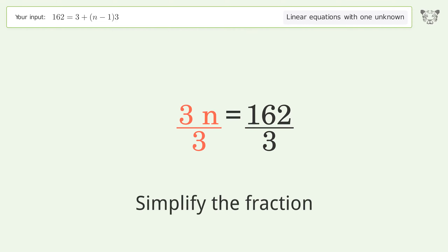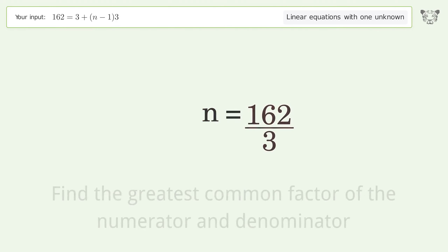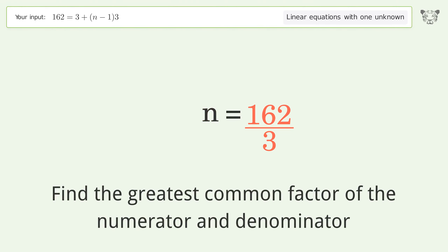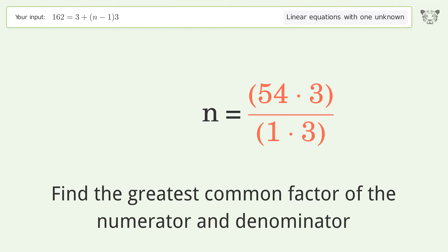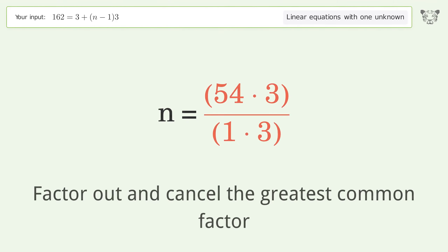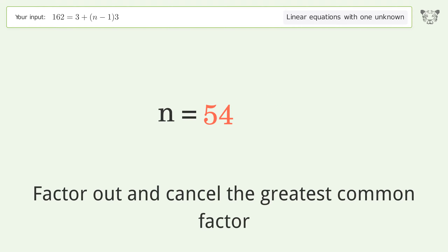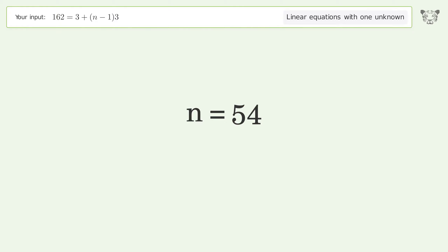Simplify the fraction by finding the greatest common factor of the numerator and denominator. Factor out and cancel the greatest common factor. And so the final result is n equals 54.